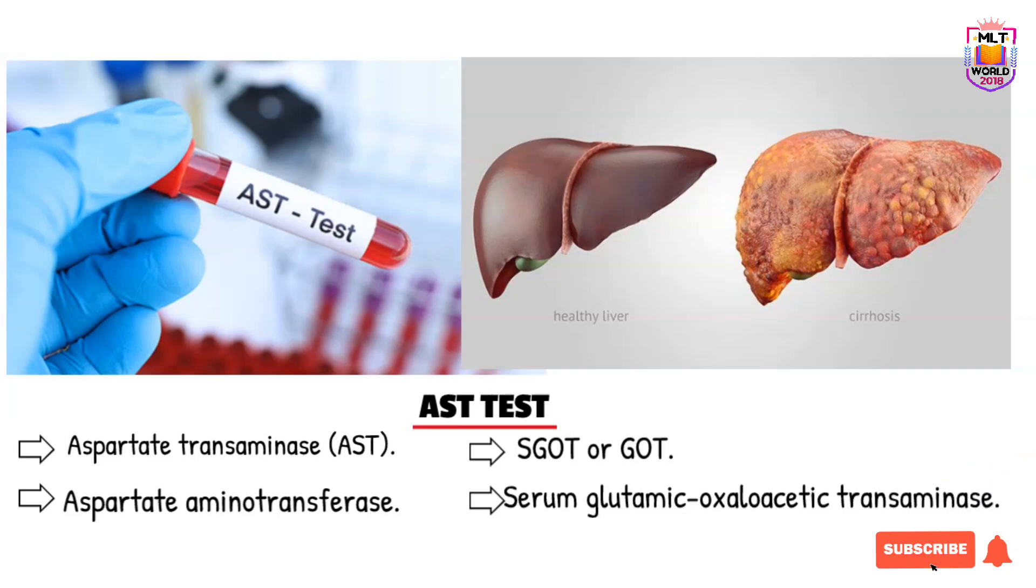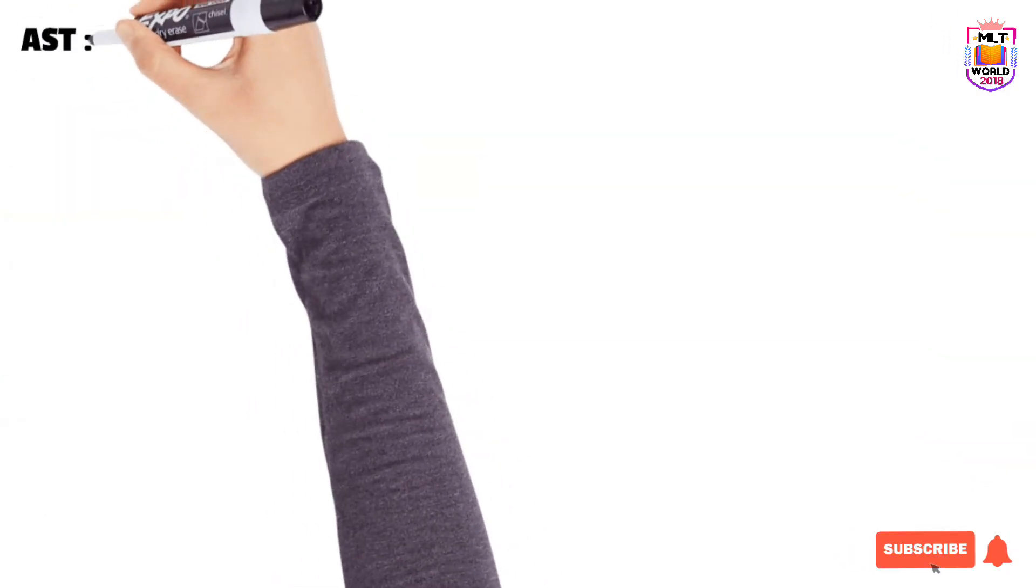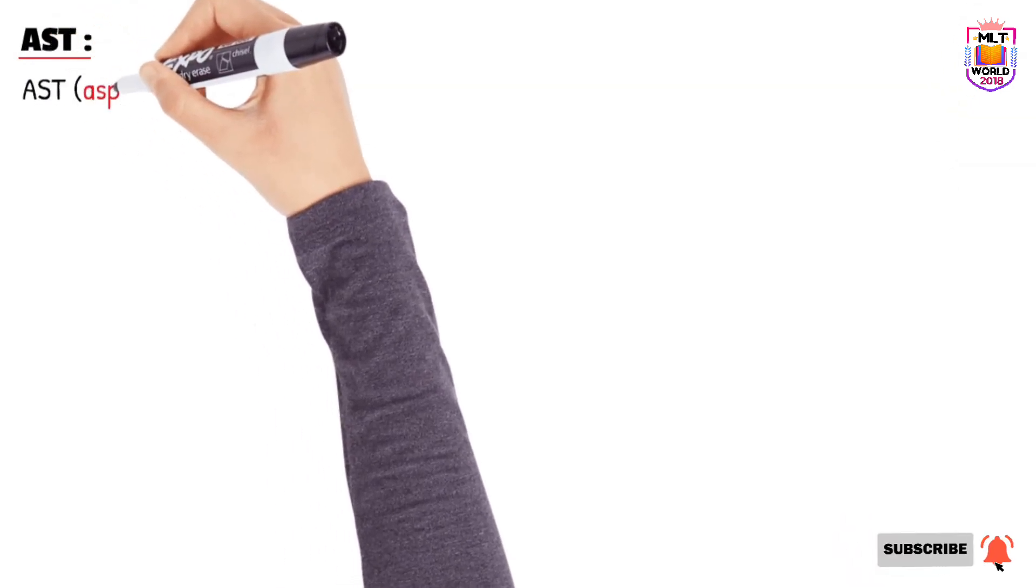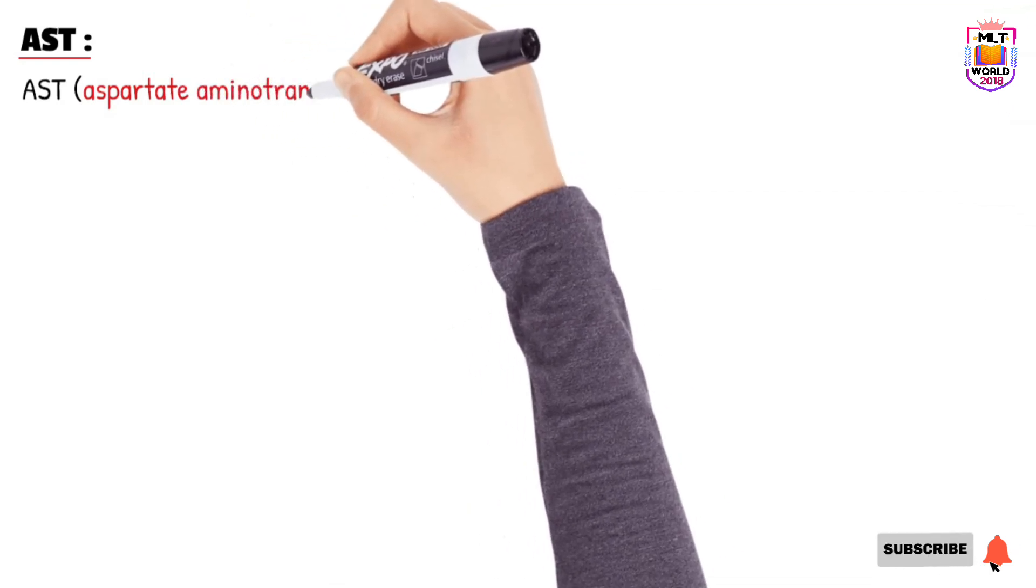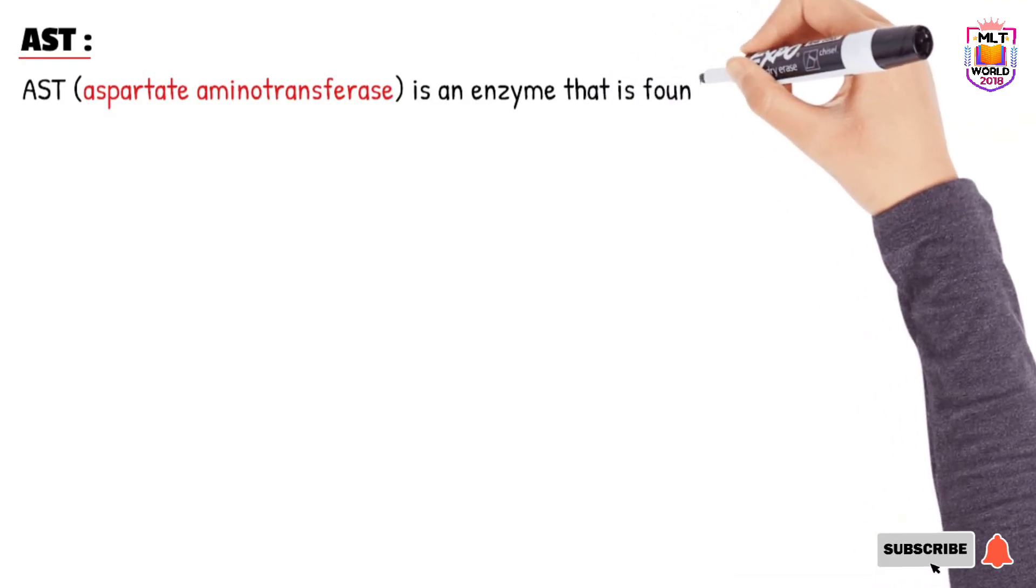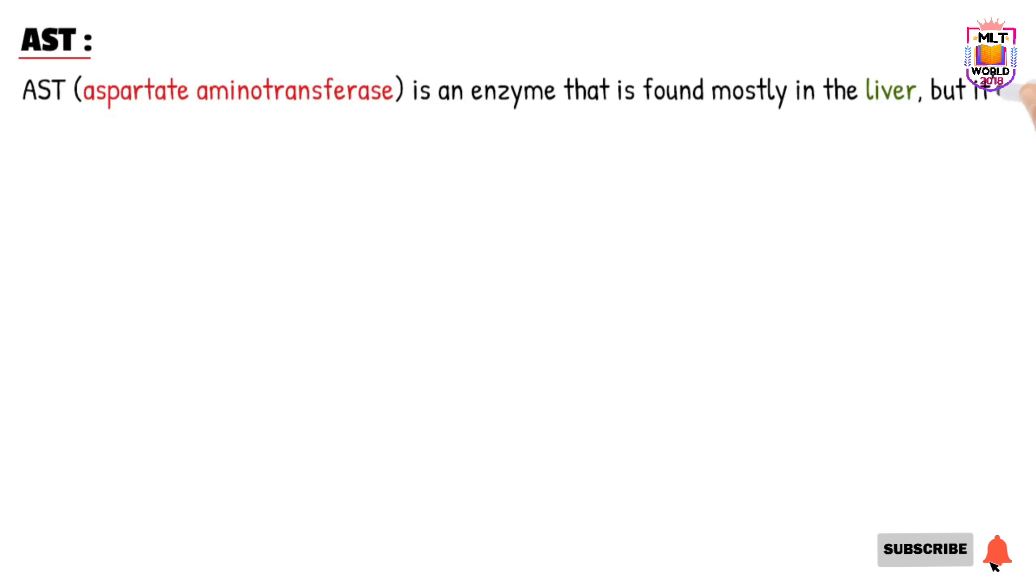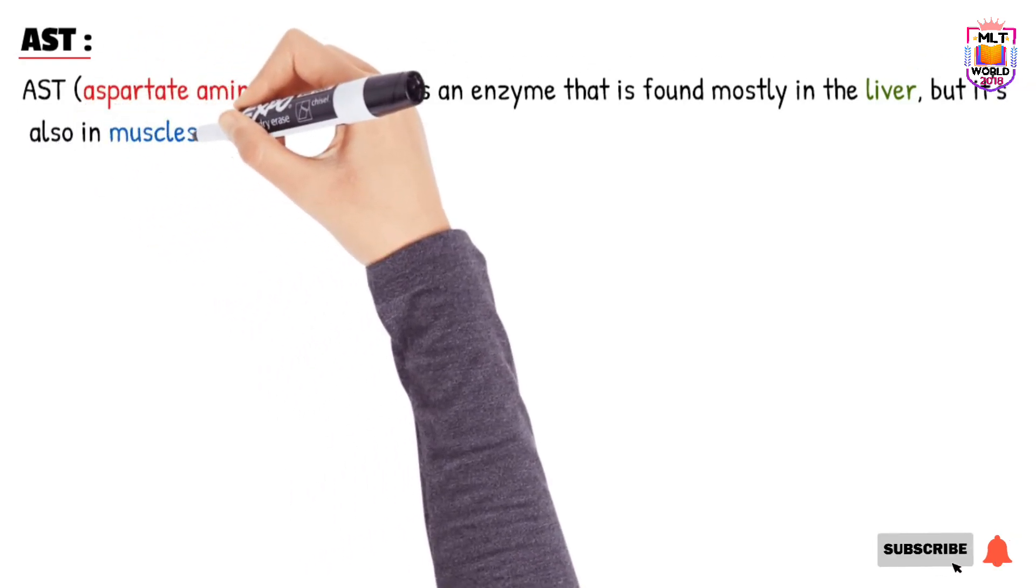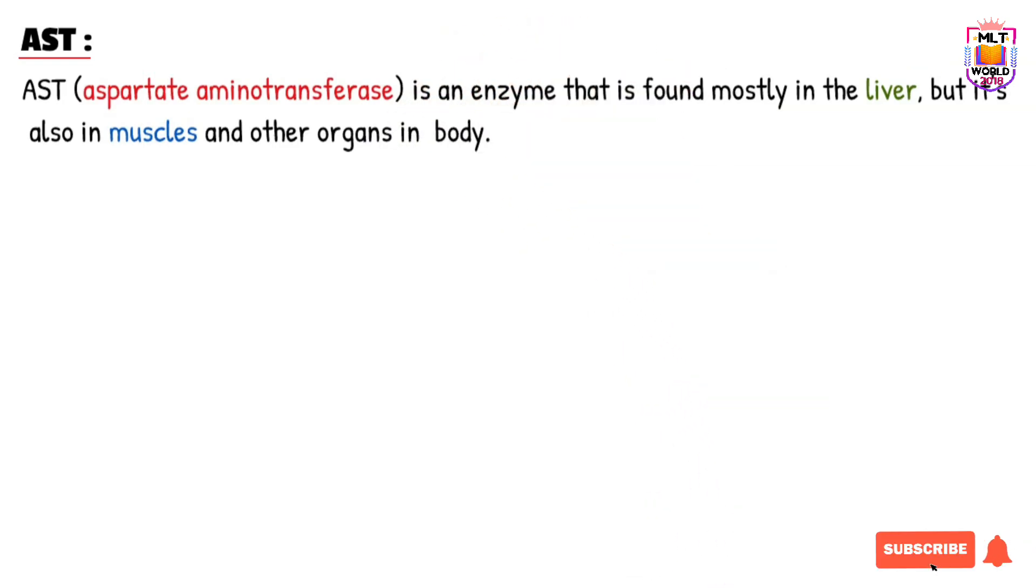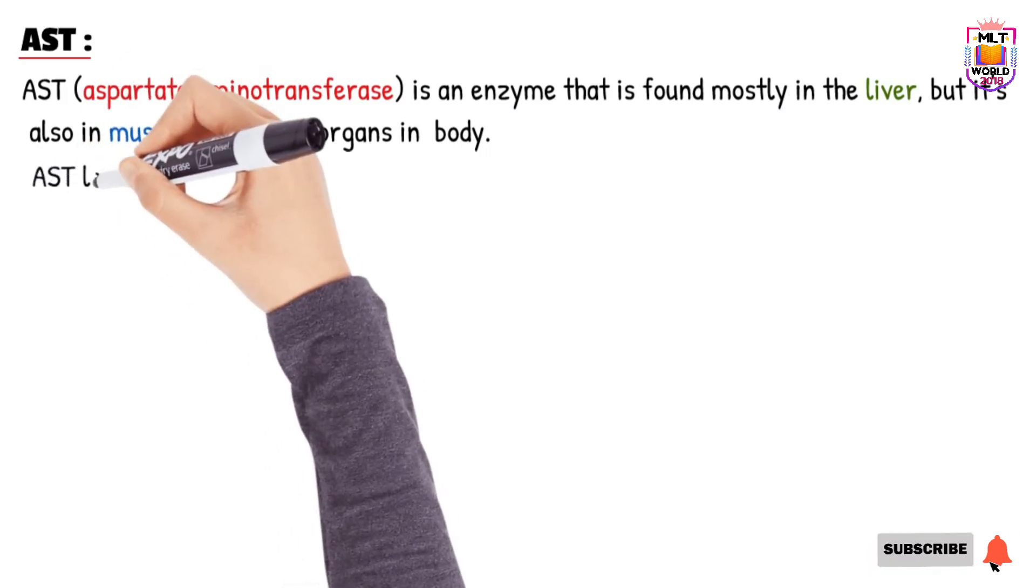Now first we have to know what is AST. AST is a liver enzyme that is produced by the liver and in muscles and some other organs. But as compared to ALT, AST is produced in other organs but ALT is mostly produced in liver only. That's why ALT is more specific than AST. But mostly both are checked together to assess the function of liver.